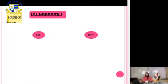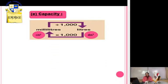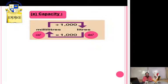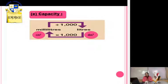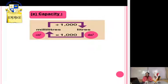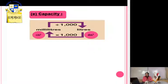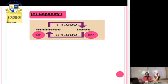The last measuring unit is capacity. We have two units: liter and milliliter. Liter is the same as cubic decimeter, and milliliter is the same as cubic centimeters. To convert from liter to milliliter: multiply by 1000. To convert from milliliter to liter: divide by 1000.